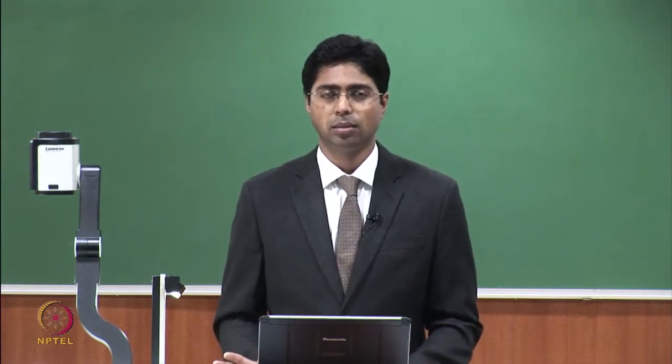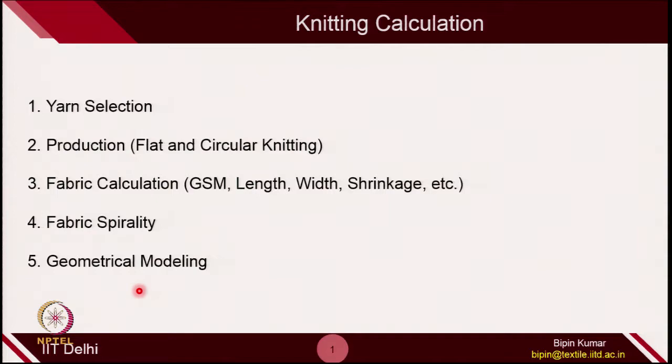Spirality is a new term for you. Spirality means the wale line will not remain vertical — in a relaxed state, the course line or the wale line will not be perpendicular to each other. This results in defects observed in the fabric appearance. We will see how a useful relationship can help in removing this spirality defect from the fabric. Additionally, some geometrical modeling — like how you can derive GSM, cover factor — everything with loop length. These are the topics we will be covering this week.